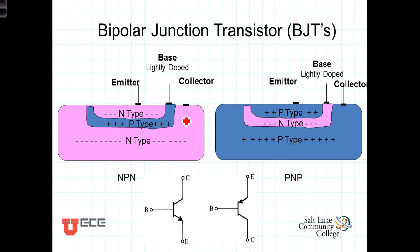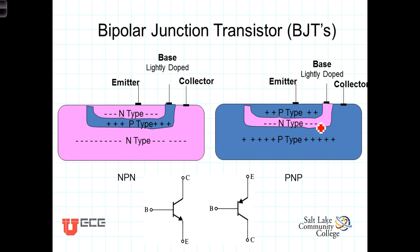Similarly, in the PNP transistor, you have a heavily doped P-type emitter and collector, separated by a relatively narrow and relatively lightly doped N-type base region.